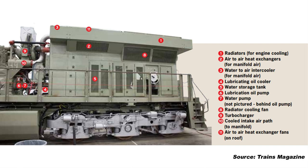The combustion air is first drawn in and compressed in the turbocharger. Compression heats the air and it must be cooled before being used for combustion. Cooler air is denser and more oxygen rich, making it a preferred manifold air temperature for increasing horsepower, controlling emissions, and reducing fuel consumption. After passing through the intercooler, the intake air passes through a heat exchanger where additional cooling occurs if conditions warrant, before going to the engine for combustion.